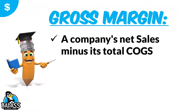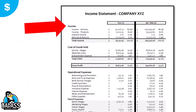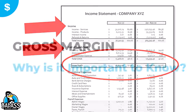To highlight once more: it's basically a company's net sales minus its cost of goods. But you can also do it by product or service — you're just gonna take the price of that product minus its cost of goods. So gross margin can refer to a particular product or service, or to the entire business. If you're looking at a profit and loss statement, your income minus your cost of goods gives you your gross profit, which is also part of your gross margin.